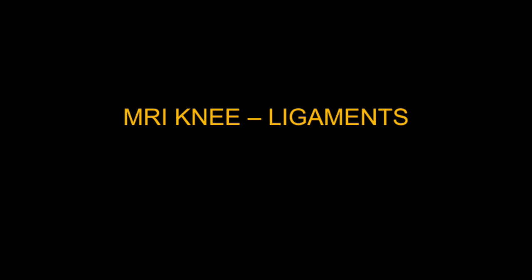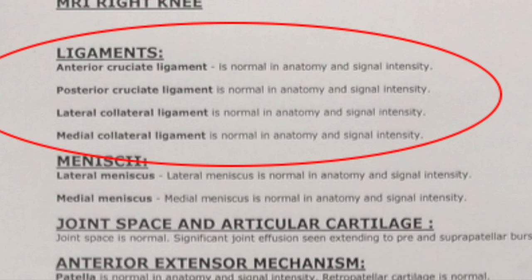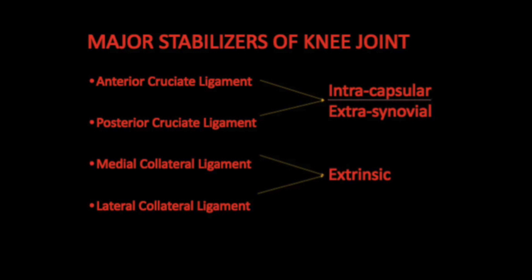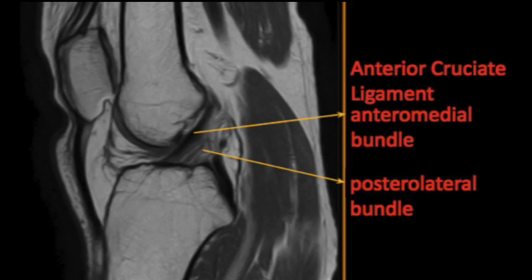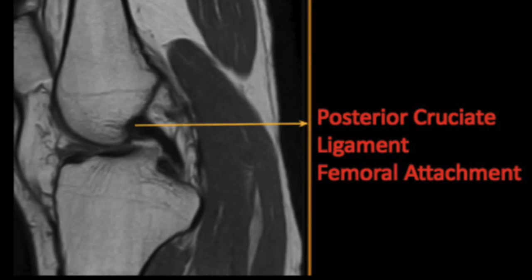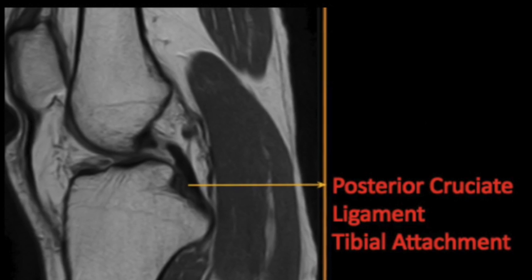The four basic ligaments I examine step by step are the anterior cruciate ligament and posterior cruciate ligament, which are the intracapsular extra-synovial ligaments, then I come to the collaterals. The ACL has two bundles: the anteromedial and posterolateral bundle. For any ligament pathology, we look for three things: ligament contour, disruption of fibers, and any abnormal signal. The posterior cruciate ligament has a femoral and tibial attachment which may not be seen in the same plane, which is normal.